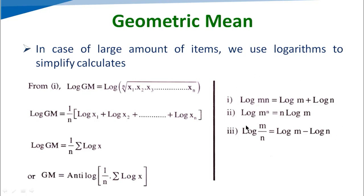To convert to simplified form, log GM equals 1 upon n times the summation of log x. We can write log GM equals 1 upon n sigma log x. Then GM equals antilog of 1 upon n sigma log x. Using this equation, we can directly find out geometric mean.